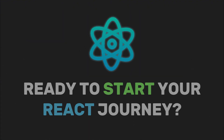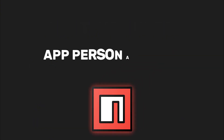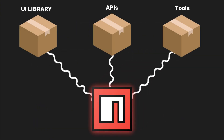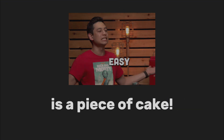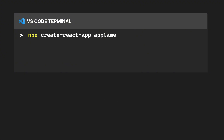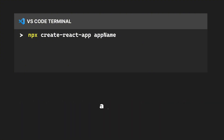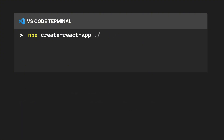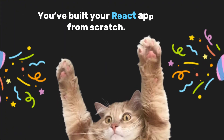Ready to start your React journey? First, you'll need Node.js and NPM. Think of NPM as your app's personal shopper, fetching all the packages you need. With these tools in hand, creating a new React app is a piece of cake. Open your terminal and type npx, then type create-react-app followed by your app's name. This tool provides a boilerplate setup with a standard directory structure and configuration. If you've already created a folder with the name you want, just type dot and slash to put the boilerplate into the same folder.